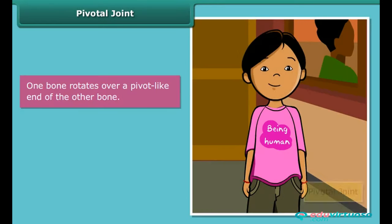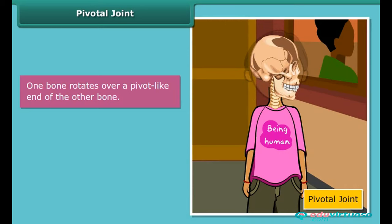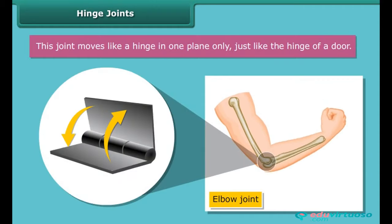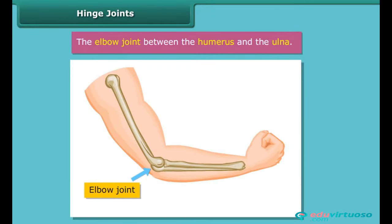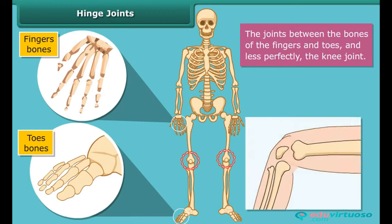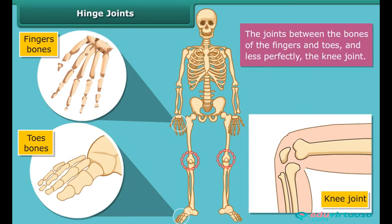In a pivotal joint, one bone rotates over a pivot-like end of the other bone, like the skull rotating on the upper end of the backbone. A hinge joint moves like a hinge, in one plane only, just like the hinge of a door. The elbow joint between the humerus and the ulna, the joints between the bones of the fingers and toes, and the knee joint are hinge joints. Hinge joints give sufficient power because there is less danger of twisting at the joint.